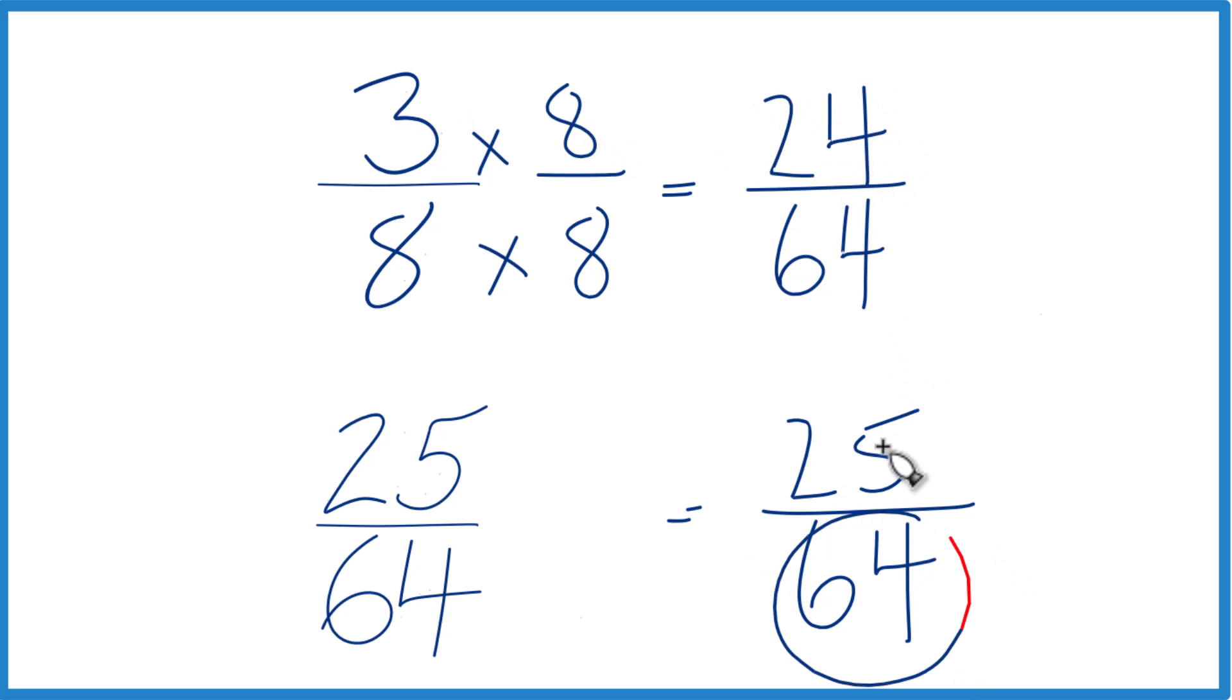And you can see, we have the same denominator, so we can compare the numerators. And 25 is bigger than 24. So 25/64 is larger than 24/64, only by 1/64.